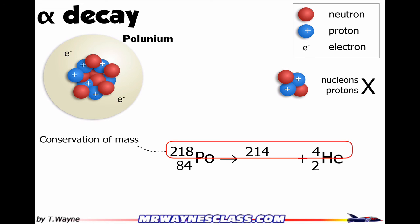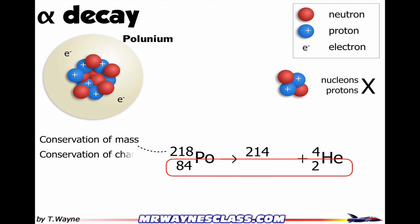Now, if I look at the bottom, that's conservation of charge. So I've got 84 protons. On the right side, I've got two protons. So what do I add to two to get 84? 82. And then I look at the periodic table and realize that something with 82 protons is lead.